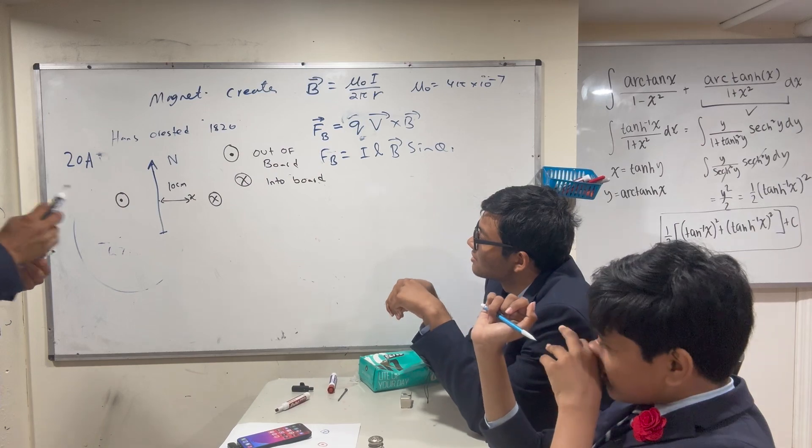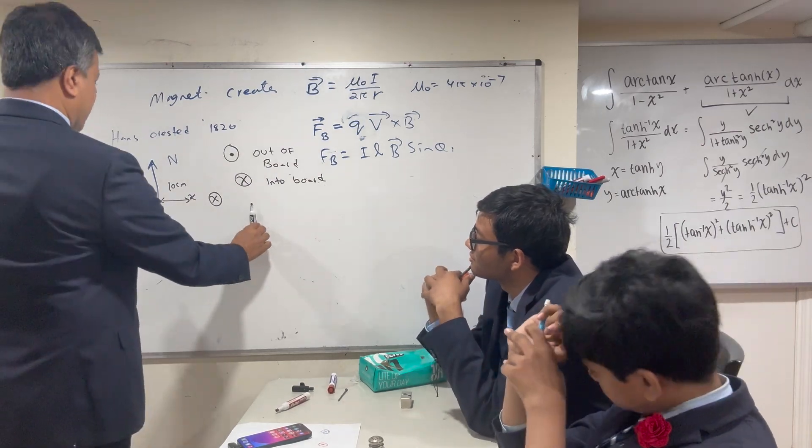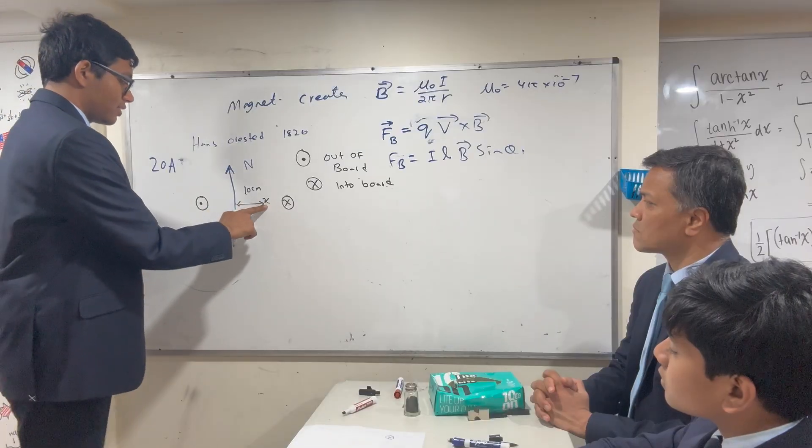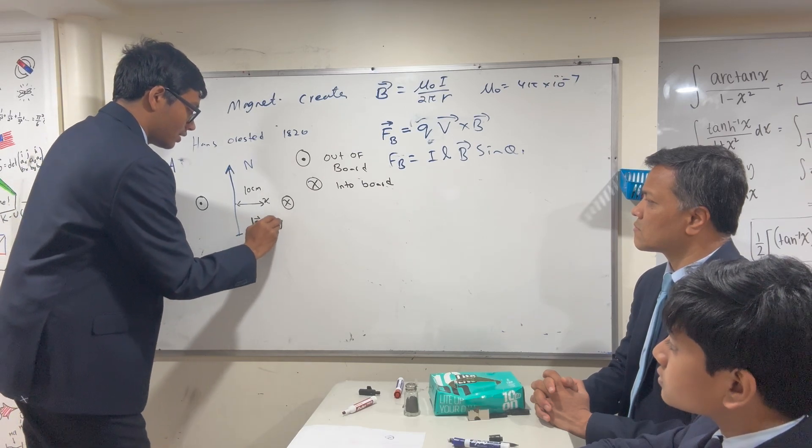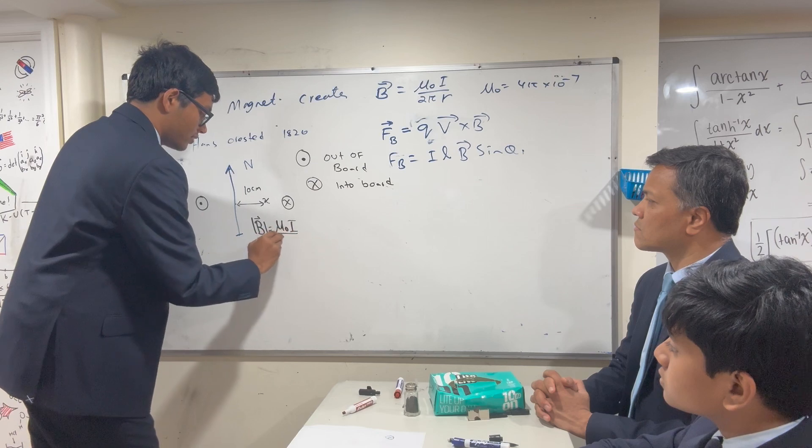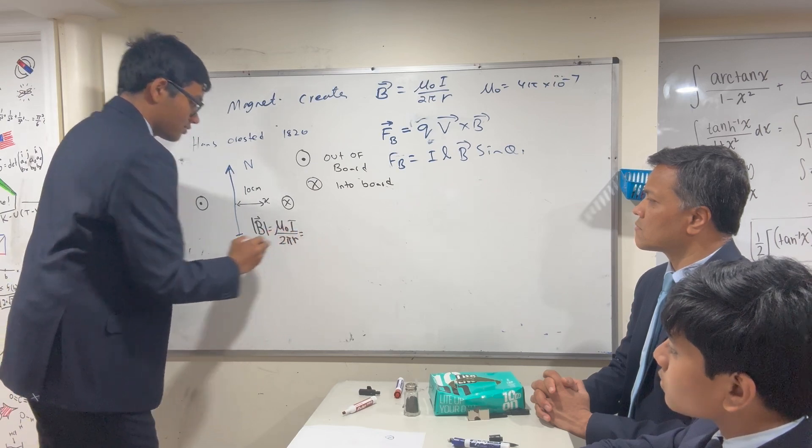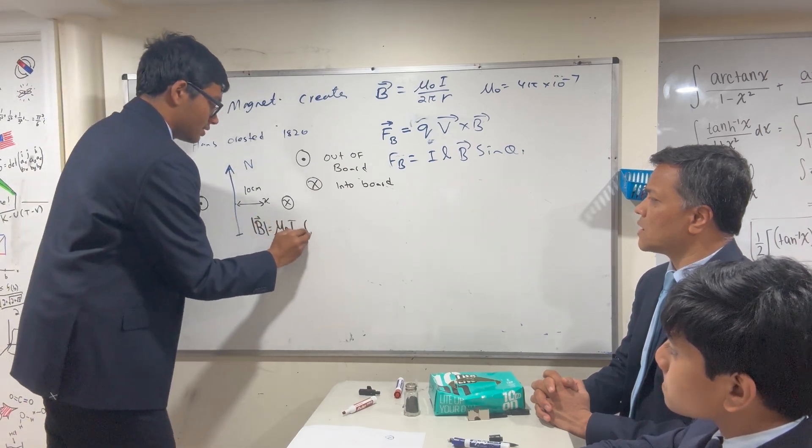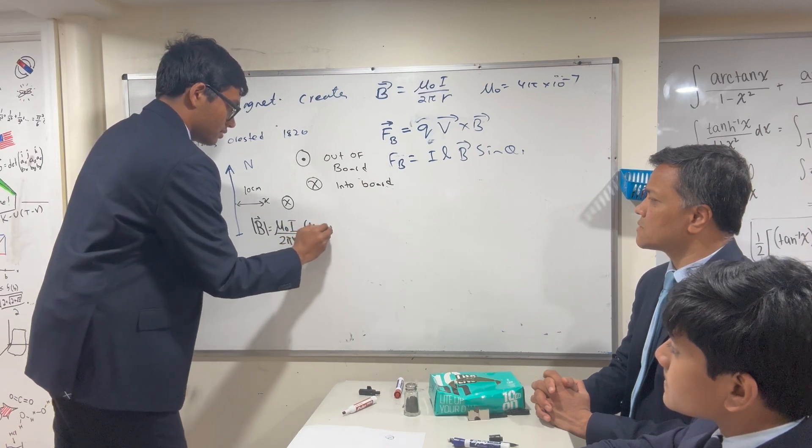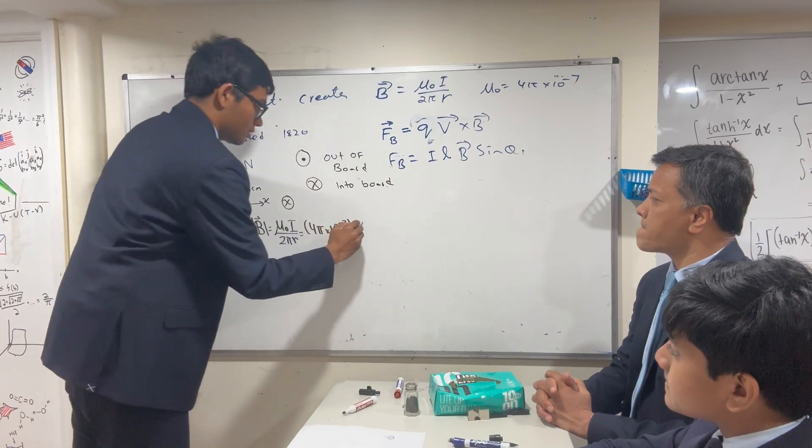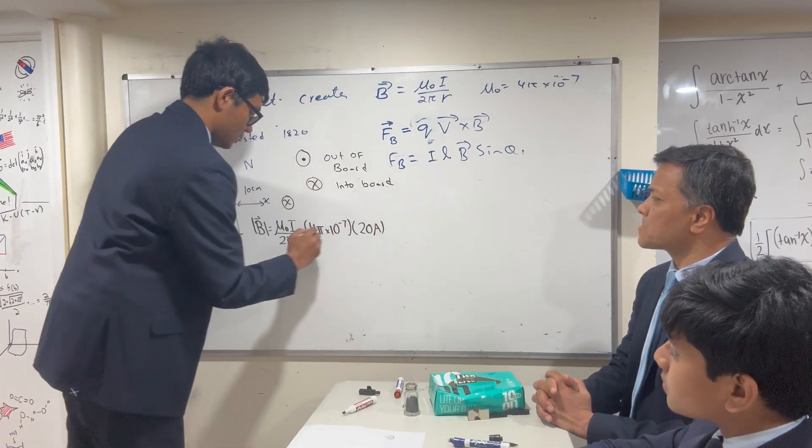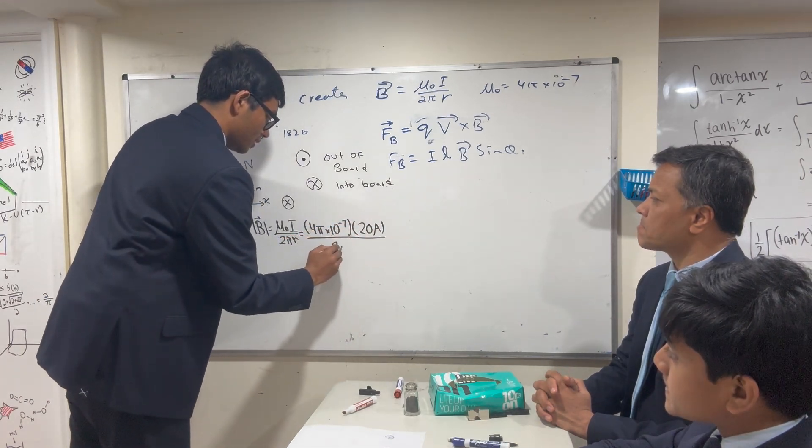Raf, can you come over here? Find the magnetic field at this location. It's given by the formula μ₀I over 2πr. So μ₀ is 4π times 10 to the negative 7, I is 20, and r is 0.1.